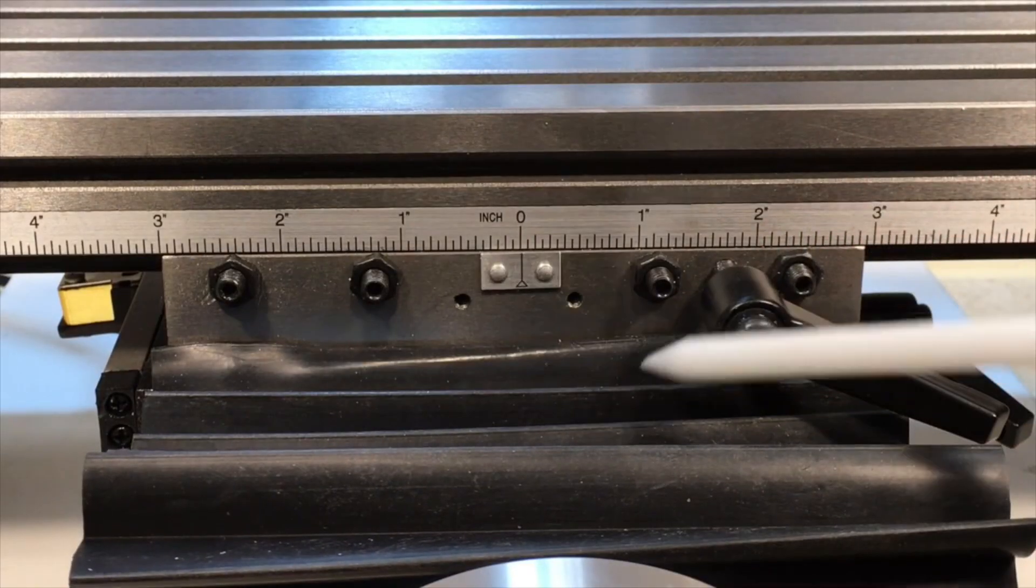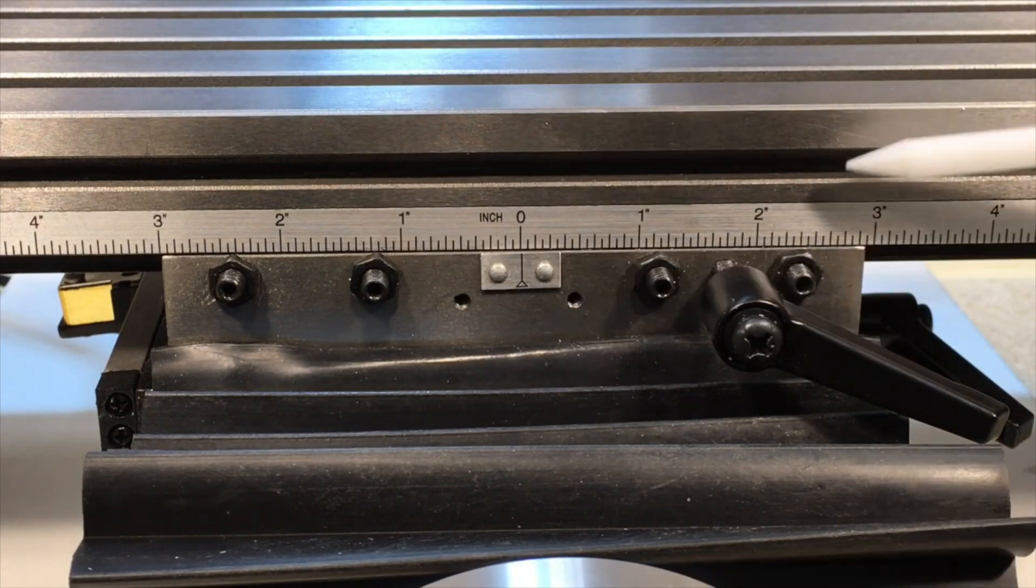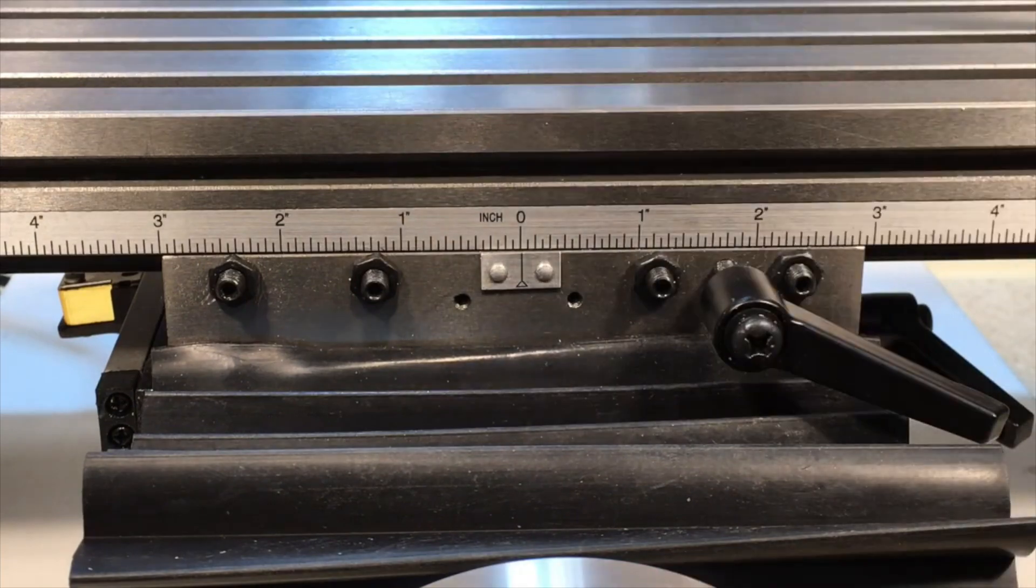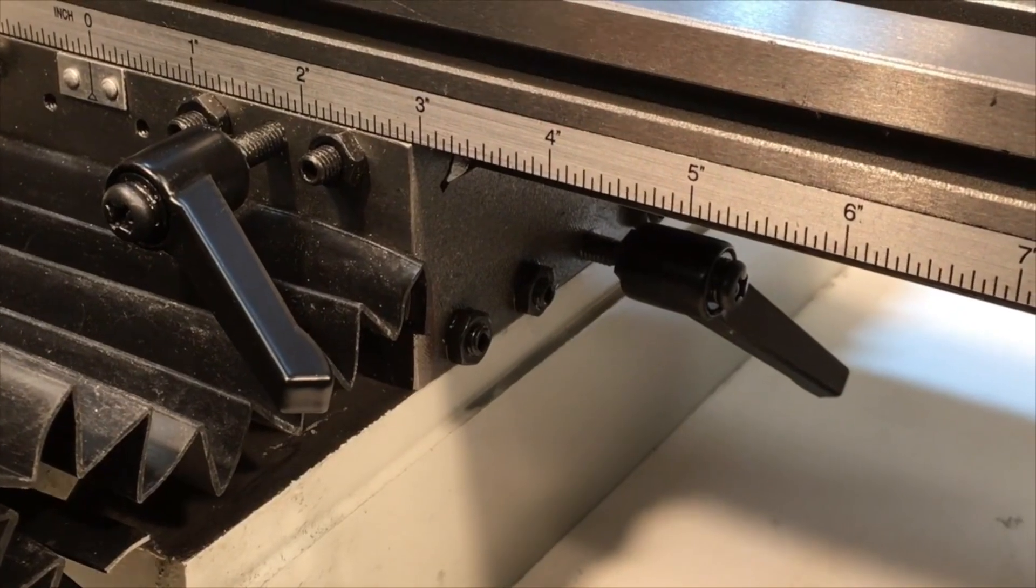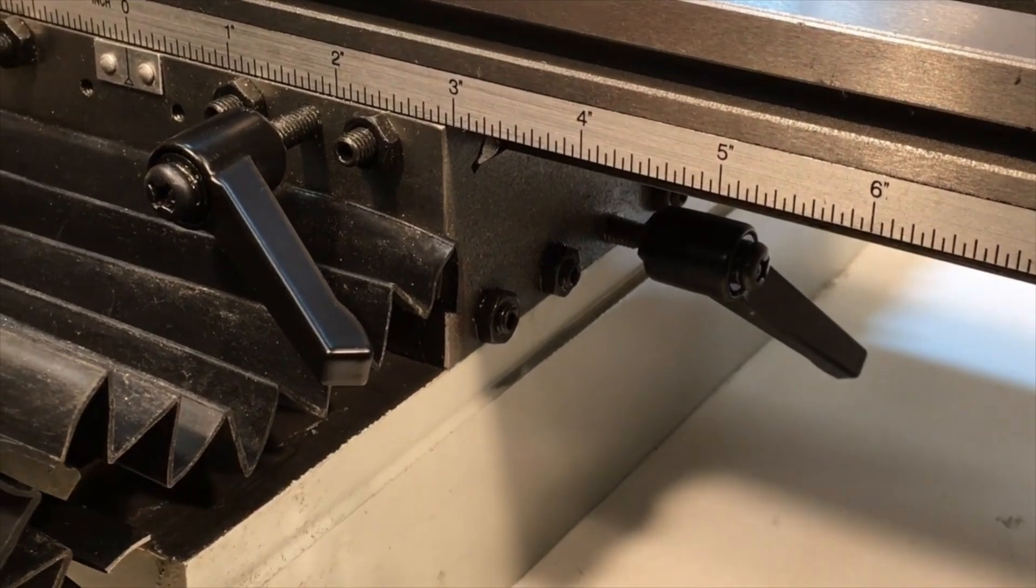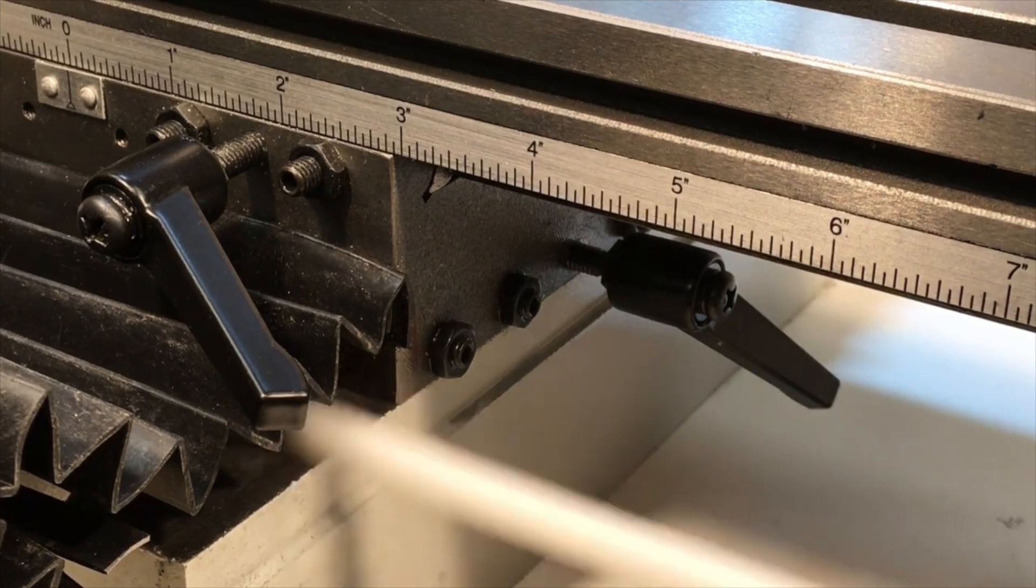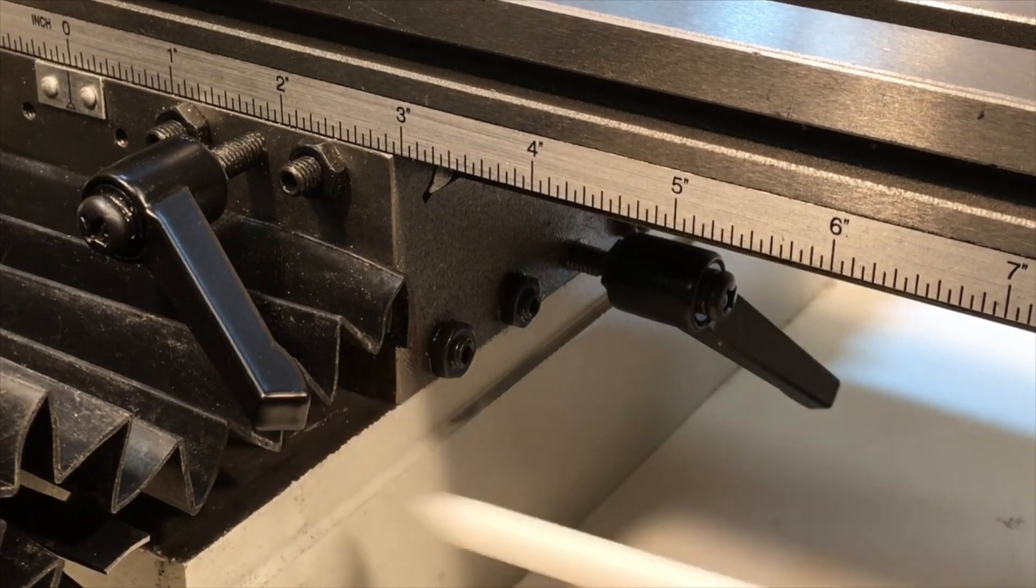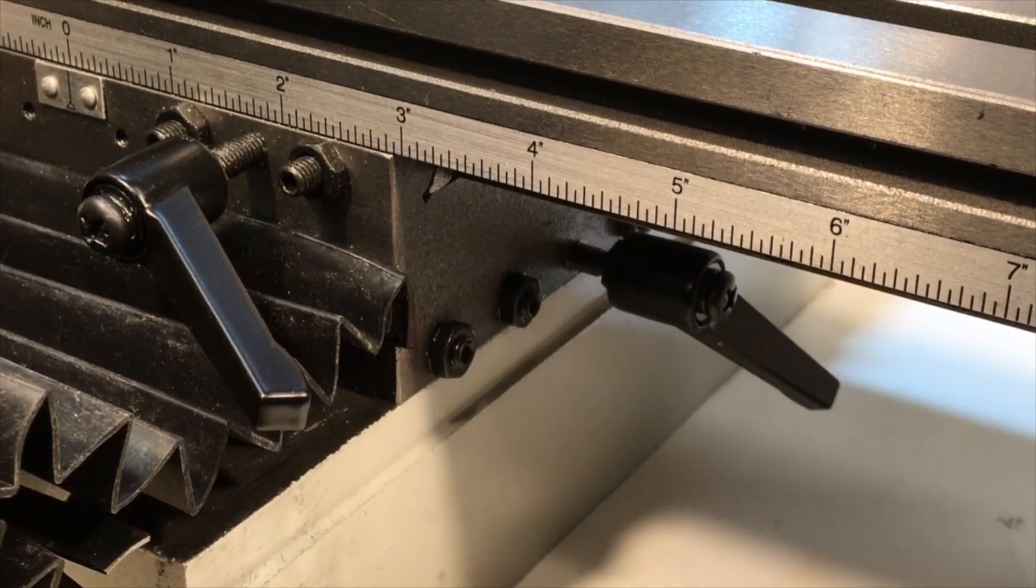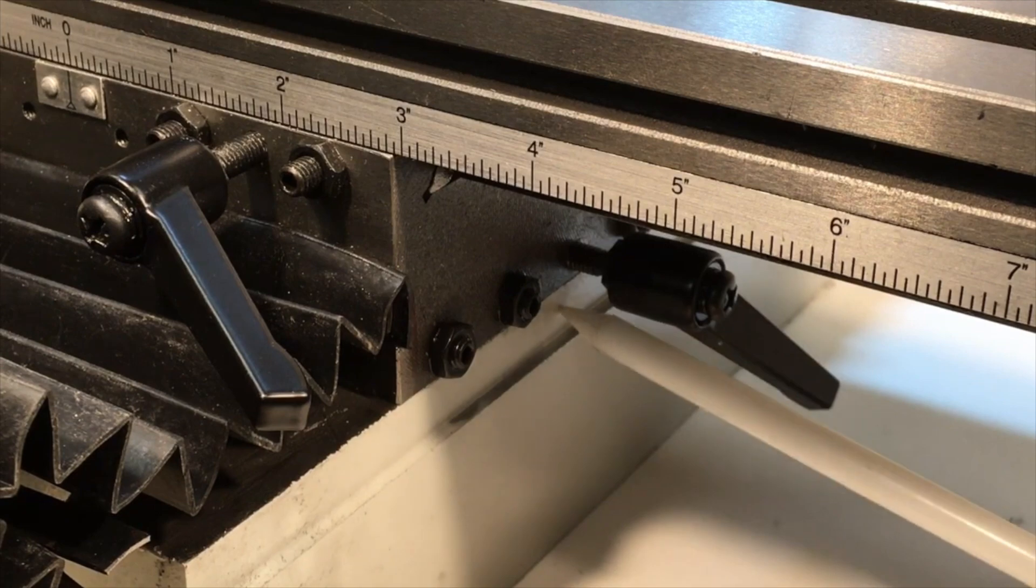So this whole metal block here that the table is resting on is called the saddle. The dovetails for the x-axis are cut into the saddle so it moves left and right. When the y-axis is moved, the entire saddle assembly carrying the table moves in and out front to back. And of course that also is riding along a dovetail and it has its own separate gib strip and gib adjusting screws so that the y-axis movement can be adjusted just like the x-axis movement.